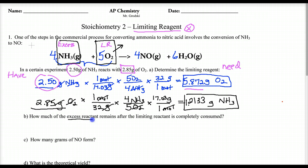Now how much excess reactant remains after the limiting reagent is completely consumed, after the reaction stops? Well, 2.85 completely goes away when you have 1.2133 grams of ammonia. So we have 2.50. So 2.50 minus 1.2133. What's that going to give me? 2.50 minus 1.2133, and that's going to give me 1.29 grams of ammonia. It's my excess based on the numbers I'm using.